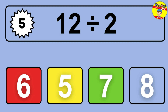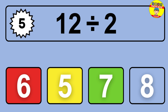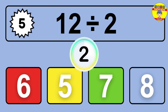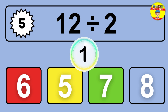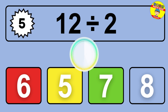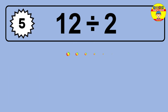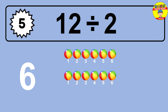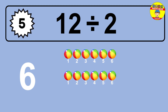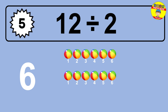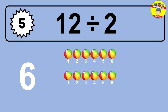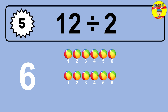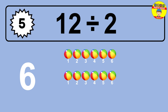12 divided by 2 is... time to think. Let's go to the solution. Divide the number 12 by 2. Each group contains 2 units, so dividing 12 by 2 results in 6 equal groups. Thus, the result is 12 divided by 2 equals 6.